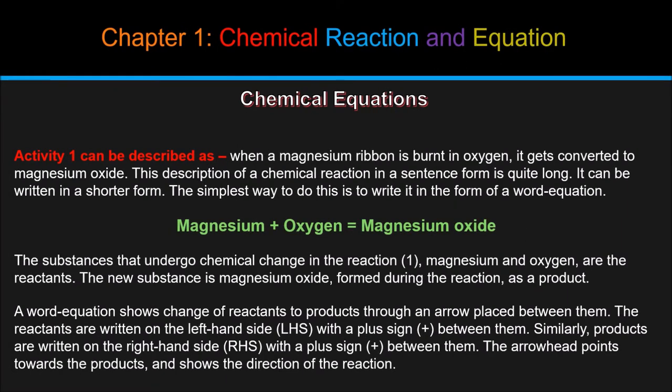Activity 1 can be described as: when a magnesium ribbon is burnt in oxygen, it gets converted to magnesium oxide. This description of a chemical reaction in sentence form is quite long. It can be written in a shorter form. The simplest way to do this is to write it in the form of a word equation, that is magnesium plus oxygen equals magnesium oxide. The substances that undergo chemical change in the reaction, magnesium and oxygen, are the reactants. The new substance, magnesium oxide, formed during the reaction is a product.